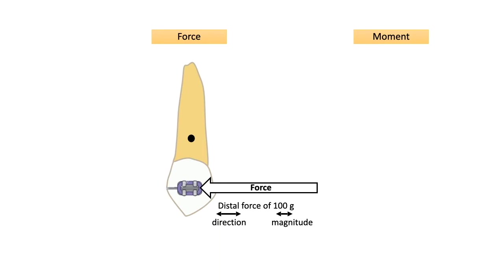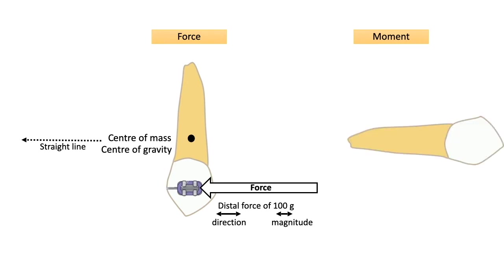The center of mass is the point at which all of the tooth's mass seems to be concentrated, such that if a force is applied through this point the tooth will move in a straight line. This happens in a gravity-free environment. In an environment where gravity is present like ours, the center of mass changes to center of gravity, as now the tooth is restrained by the force of gravity.